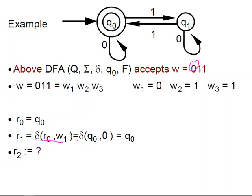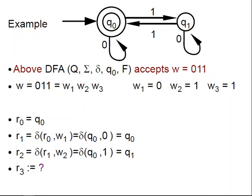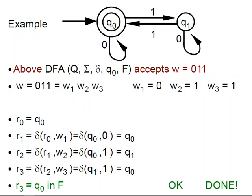r2 is δ(r1, w2), which is δ(q0, 1), because the second symbol is a 1, which is q1. And r3 is δ(r2, w3), which is δ(q1, 1), which is q0. r3 is q0, which is in F, is an element of F, and so okay, done, this string is accepted.